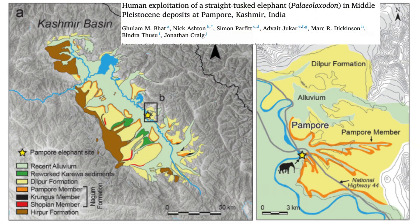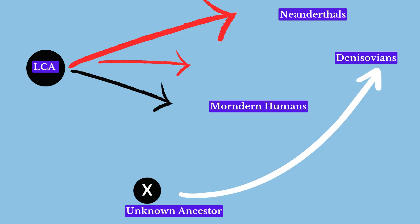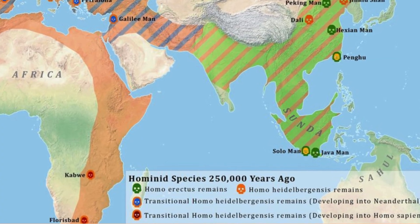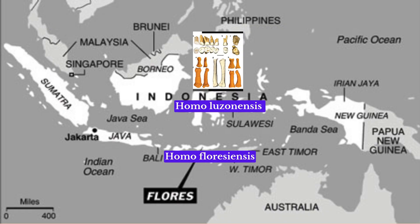Evidence of human activity in Kashmir Valley around 300,000 to 400,000 years ago, where humans relied on mammoth carcasses, further supports this claim. The Denisovan genome also reveals evidence of interbreeding with another ancient population whose identity remains a mystery — scientists speculate Denisovans may have mixed with older species like Homo erectus, Homo antecessor, or a late-surviving Homo heidelbergensis in Asia. Discoveries like Homo floresiensis on Flores and Homo luzonensis remains from Callao Cave on Luzon island in the Philippines suggest that multiple human groups once inhabited Wallacea.